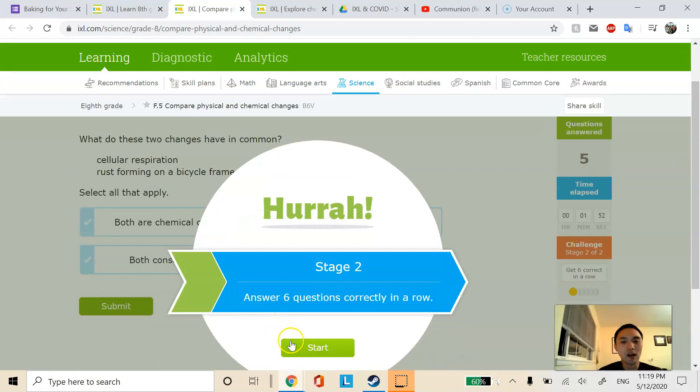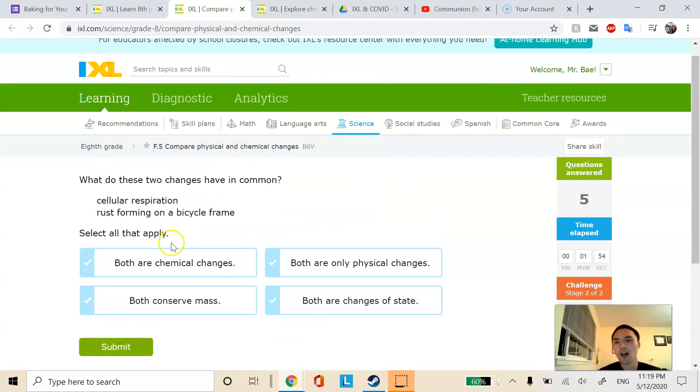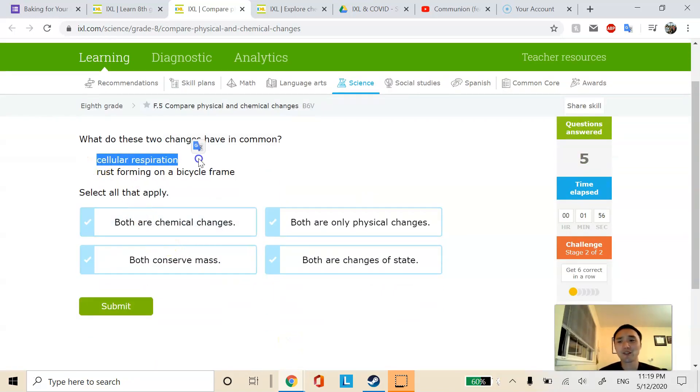Moving on to stage two. I'll only do a couple of these and I'll end it. So cellular respiration. You should have learned this in seventh grade life science. But that is going to be a chemical change most definitely. Rust forming on a bicycle is also a chemical change. So that's definitely both chemical changes. And as I mentioned, if you see both conserved mass, that is always true. So make sure you click on that as well.